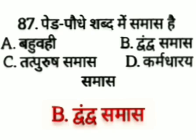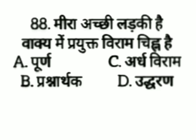Paidh paoode shabd mein samas hai — option A: bahuri samas, option B: dhvandv samas, option C: tatpurish samas, option D: karmadariya samas. The answer is option B, dhvandv samas. Paidh paoode shabd mein dhvandv samas hai.